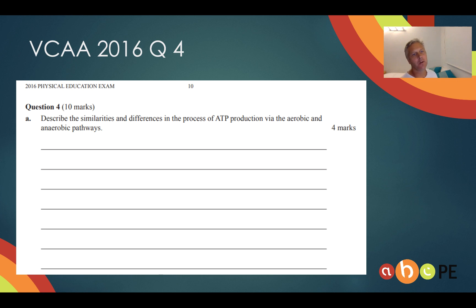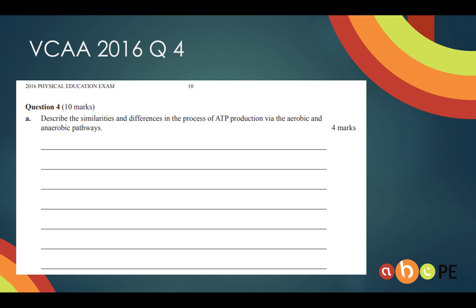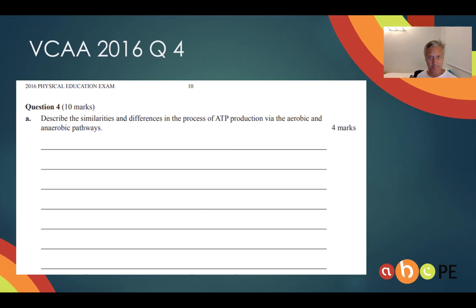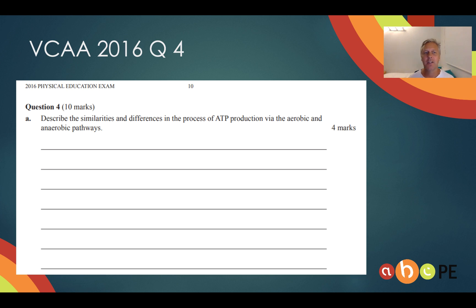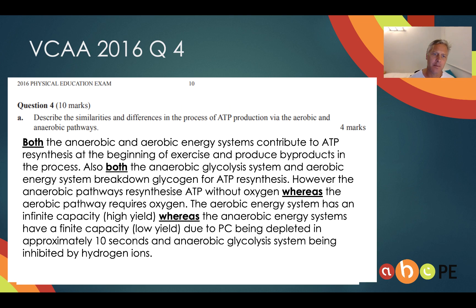Finally, we have a short answer question from 2016. The question asks: describe the similarities and differences in the process of ATP production by the aerobic and anaerobic pathways. It's worth four marks. I'm thinking two similarities and two differences, although I could go with three and one, or one and three — but there must be both similarities and differences in the answer. Here's an exemplar answer — there are multiple valid answers, but this is a good one. You'll notice I've highlighted the words 'both' and 'whereas'.